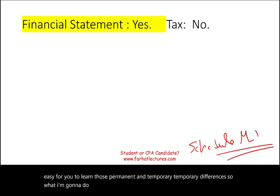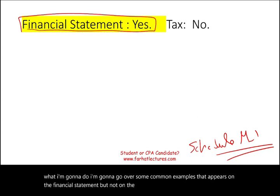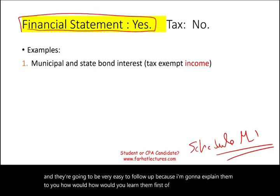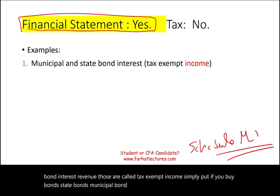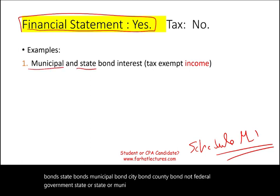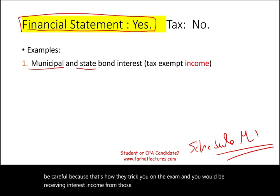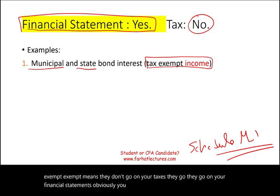We'll go over common examples that appear on the financial statement but not on taxes. The first is municipal and state bond interest revenue — tax-exempt income. If you buy state, municipal, city, or county bonds (not federal government bonds — be careful, that's a common exam trick), the interest income you receive is exempt, meaning it doesn't go on your taxes but does appear on your financial statements.